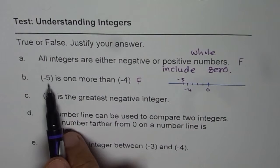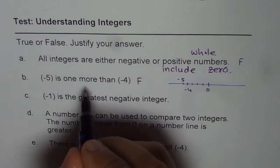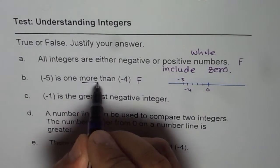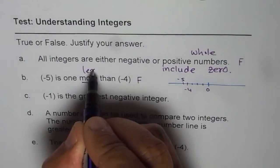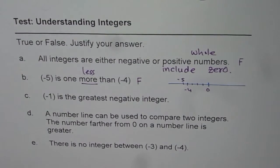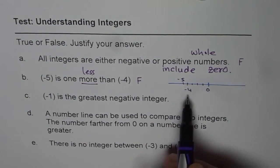So, minus 5 is not 1 more, but it is 1 less than minus 4. It is on the left side of minus 4.